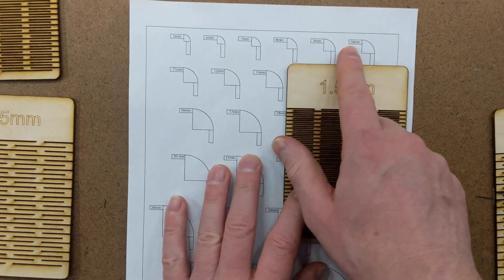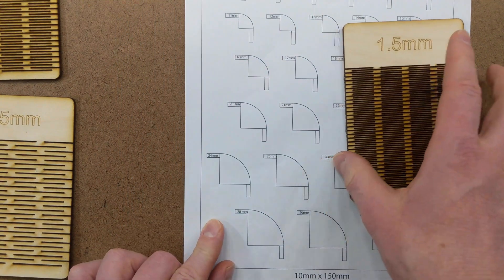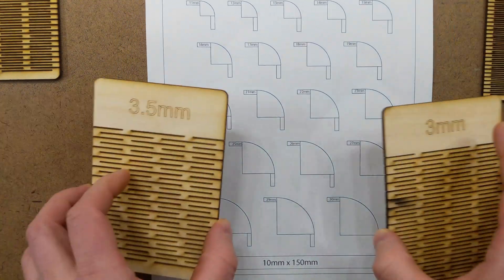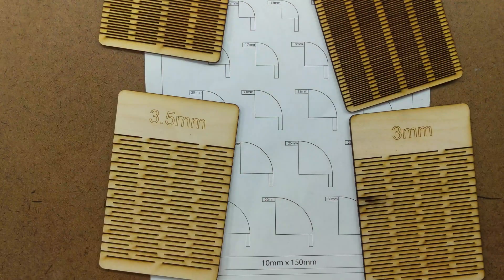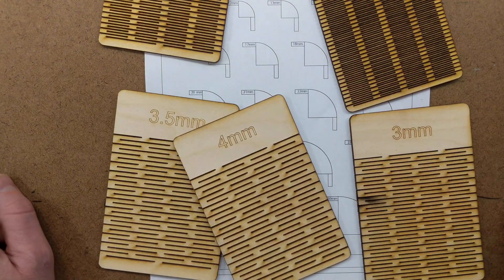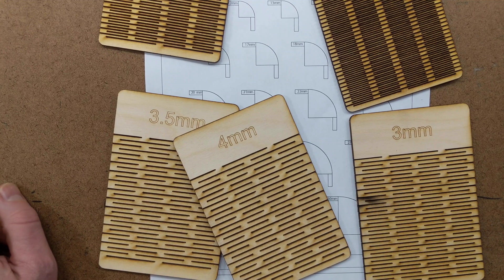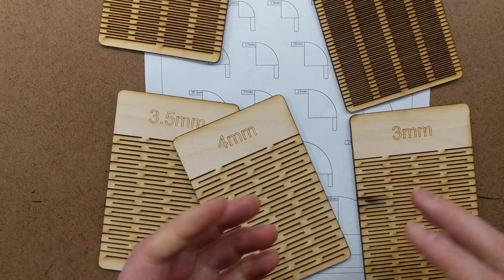You can use a radius template like this to test out cut patterns on the specific material that you're using. That way you know ahead of time what design parameters you can use so you have more chance of success by cutting out living hinges on your laser cutter.